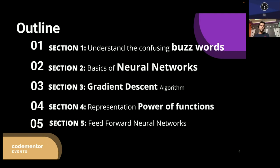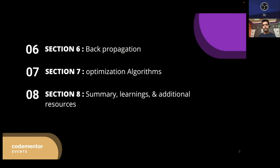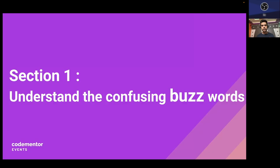Here is the outline of this talk. First, I'll start with some confusing buzzwords. After that, I'll explain the basics of neural networks, followed by the gradient descent algorithm, representation power of functions, feed-forward neural networks, back propagation, and different optimization algorithms. Finally, a summary and learnings. Let's get started with the confusing buzzwords.